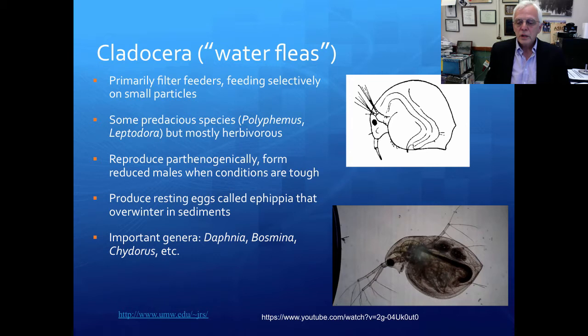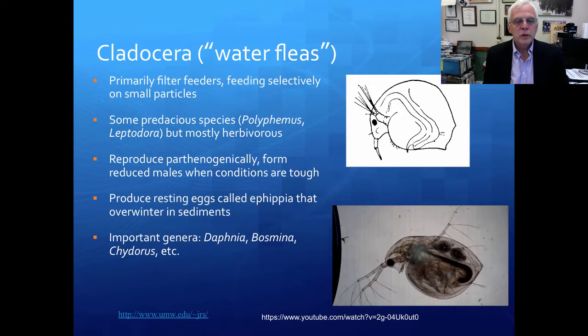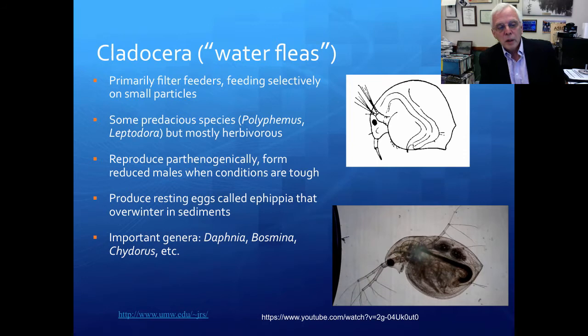Let's talk about cladocera, or the so-called water fleas. These are primarily filter feeders. I'll run this video here so you can see what they look like in action — you can see the little heart and the appendages on the lower part of the animal, which are their filter-feeding appendages. They feed quite selectively on smallish particles, normally less than about 40 microns — something like a quarter the thickness of a sheet of paper would be a really big food particle for these things. Some cladocera are predaceous, like polyphemus and leptodora, and they're quite voracious predators. But most of the cladocera are herbivores.